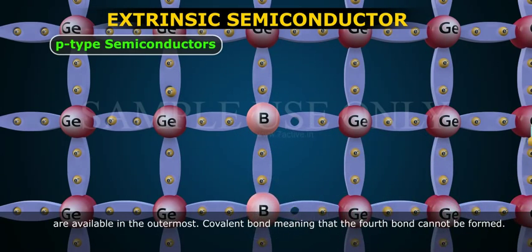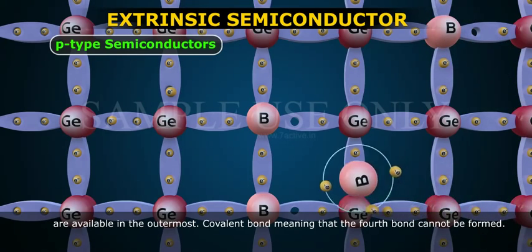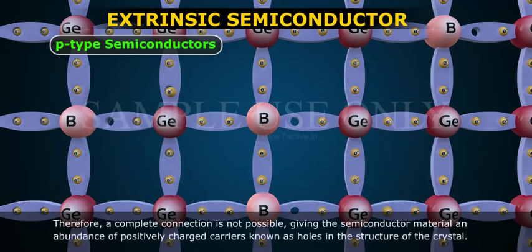Therefore, a complete connection is not possible, giving the semiconductor material an abundance of positively charged carriers, known as holes, in the structure of the crystal.